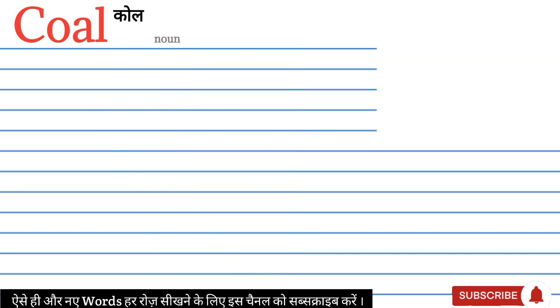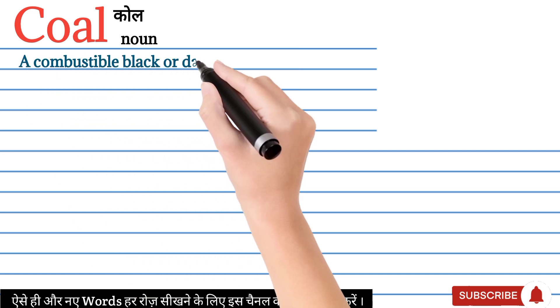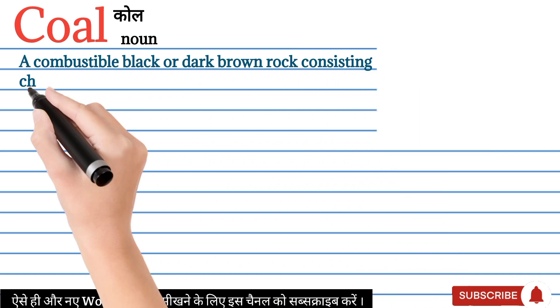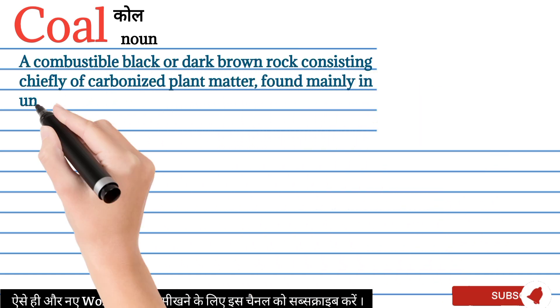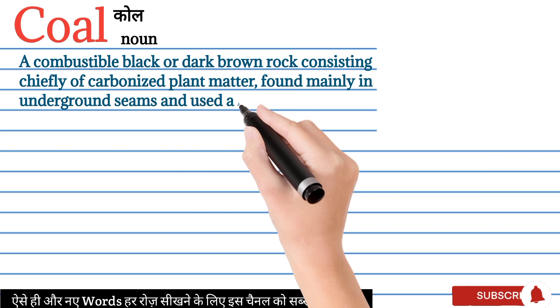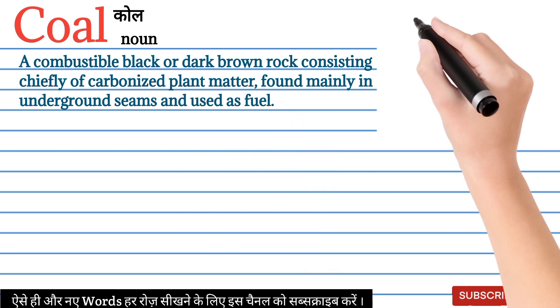Coal ka matlab English mein: a combustible black or dark brown rock consisting chiefly of carbonized plant matter, found mainly in underground seams and used as fuel.